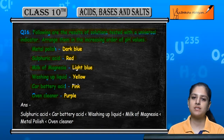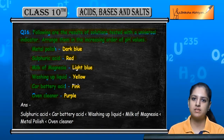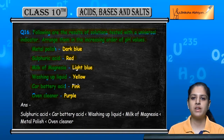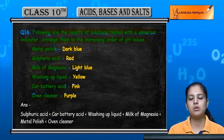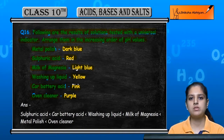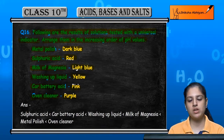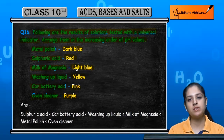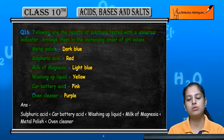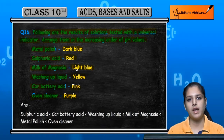The color of acids starts from red, then red becomes faint and comes to yellow, and from yellow it becomes green — that is the neutral solution. From green, when it starts becoming basic, it goes into shades of blue, and then violet is the end color for a base.